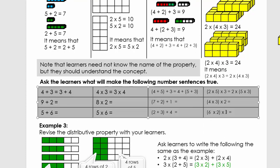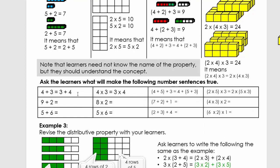Now let's look at this example. We're going to make these statements true by completing them. I'll do the first example with you: four plus three equals three plus four; four times three equals three times four; (four plus five) plus three equals four plus (five plus three); and (two times five) times three equals two times (five times three). I want you to pause the video now and then do the rest.